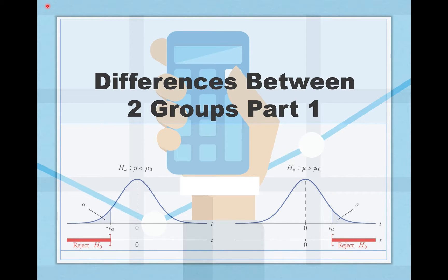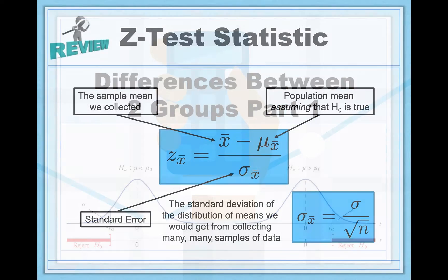In this video, we're going to learn about the independent samples t-test and the Cohen's d effect size associated with the independent samples t-test. This is going to be a new hypothesis test that's useful for a different sort of experimental context, a different experimental situation.